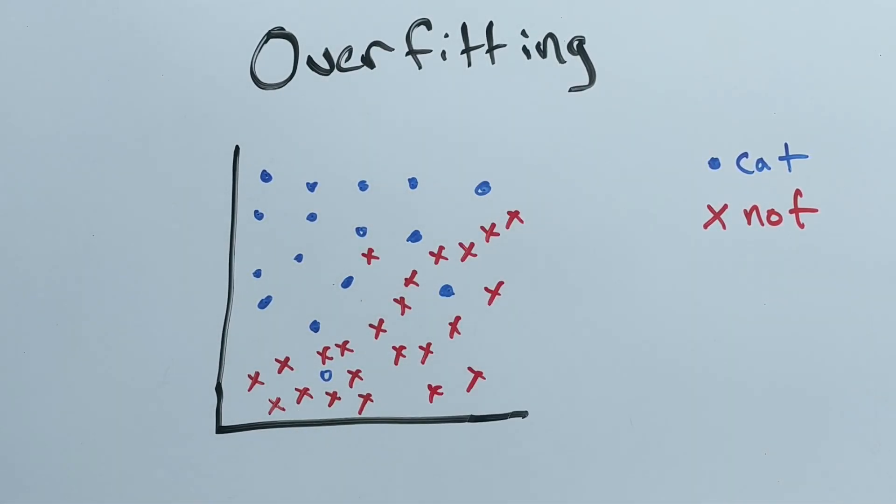If our data is laid out like this, we can roughly separate these two classes with the line through the middle. We'd miss some points on the other side of the line, but we'd be pretty accurate.